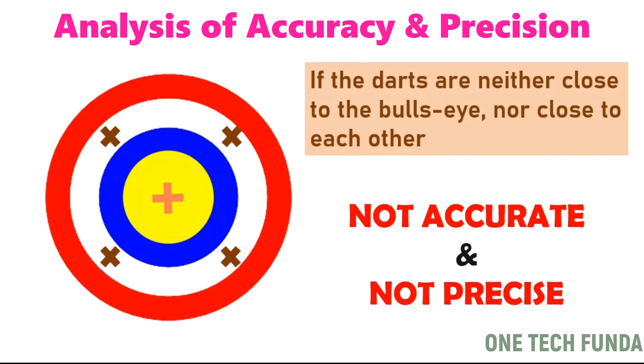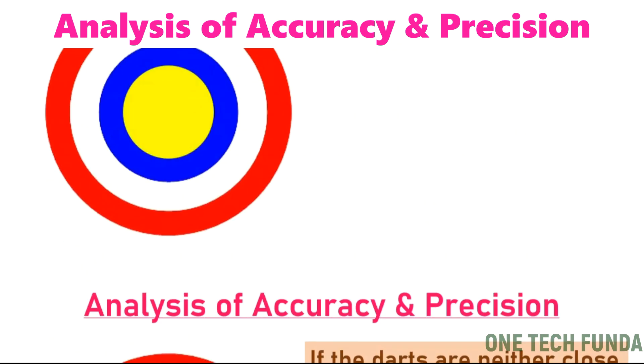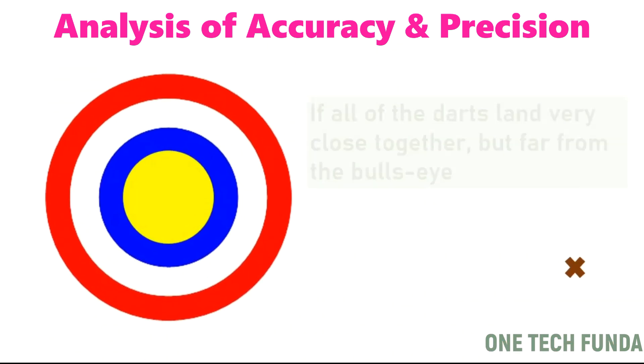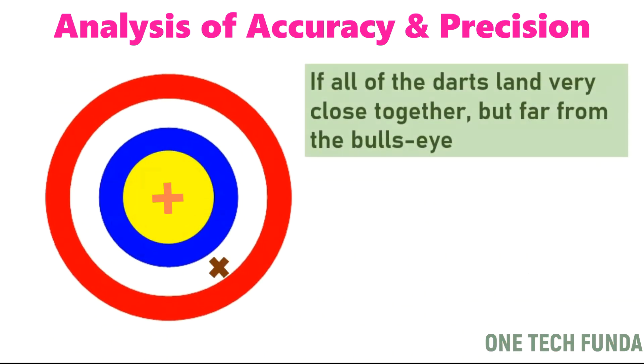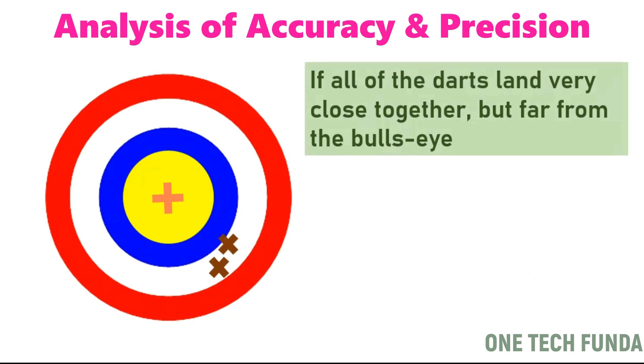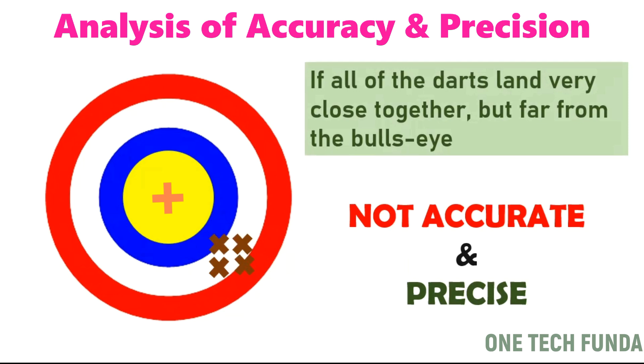If the darts are neither close to the bullseye nor close to each other, that means it is neither accurate nor precise.